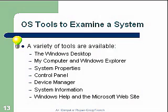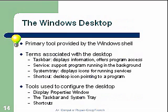The primary tool is provided by the Windows shell. Terms associated with the desktop: the taskbar displays information and offers program access. Services support programs running in the background. The system tray displays icons for running services. A shortcut is a desktop icon pointing to a program.